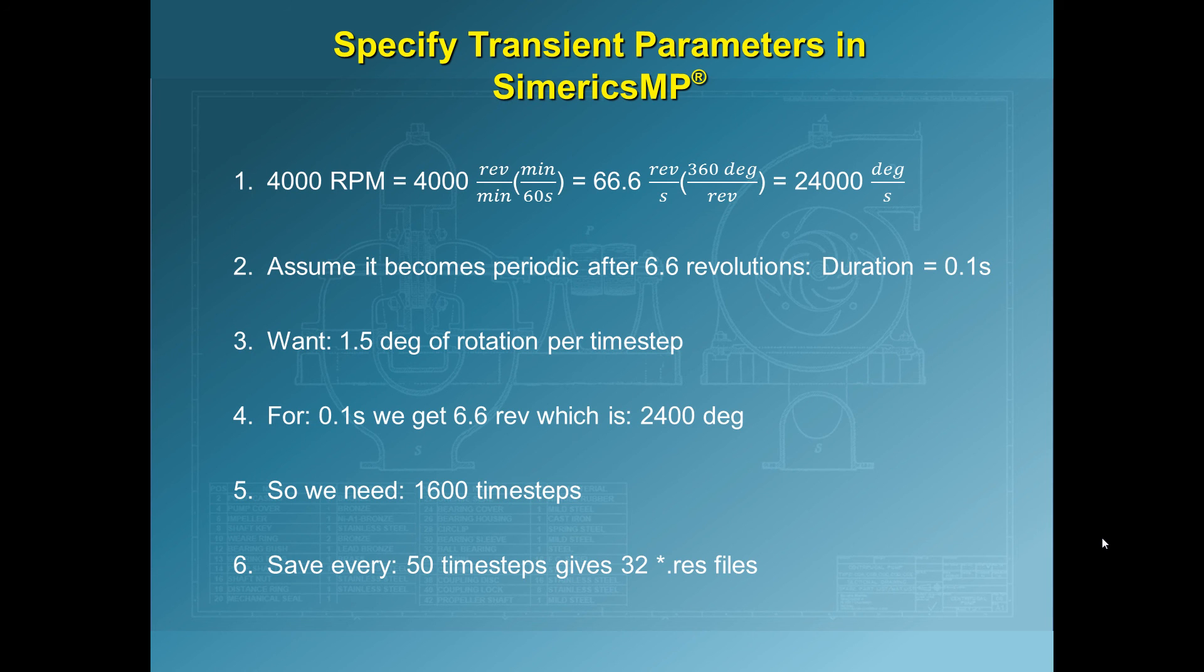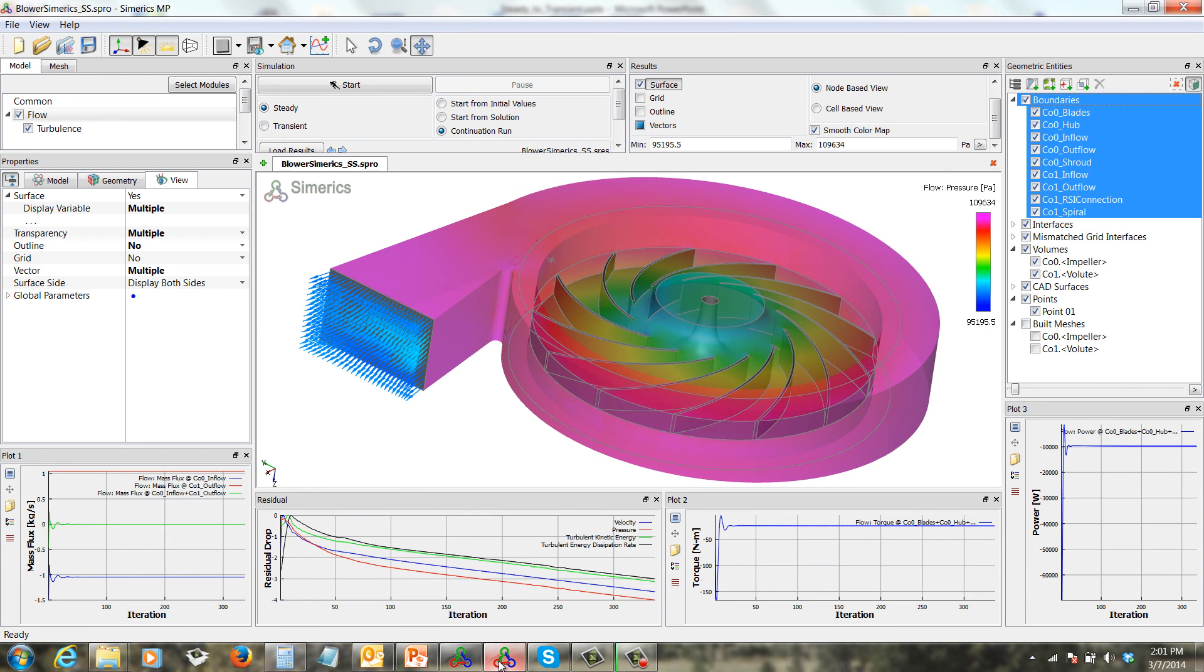These files can get fairly large, so you don't want to save too often, and it also slows down the simulation process if you save too often. Here we see the blower model in SimericsMP, which was built in CF Turbo and exported into SimericsMP, where it was automatically meshed and the CFD parameters specified as a steady-state simulation. And this has already been run, so we have results here. Now we're ready to switch the simulation type to transient.